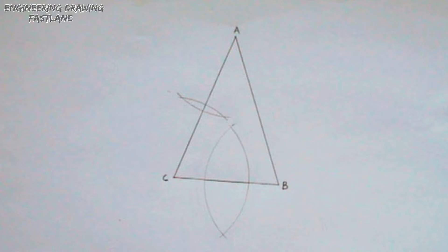Having done that, I will produce the bisectors of line BC and line AC to meet at a point.